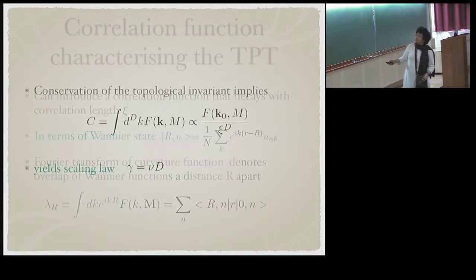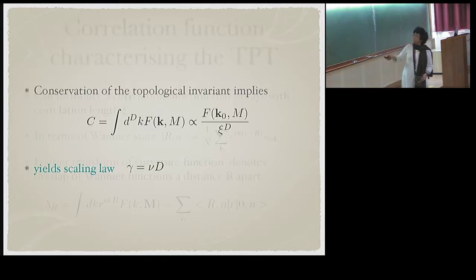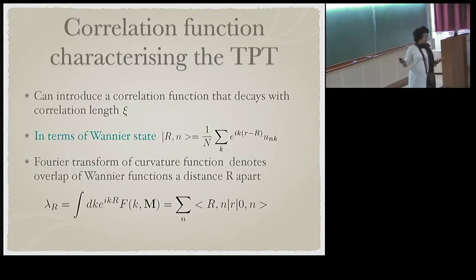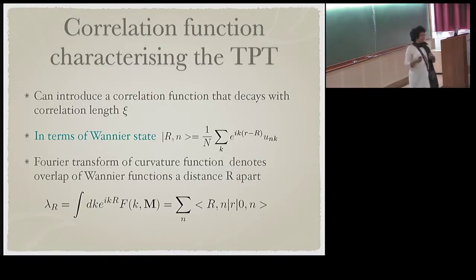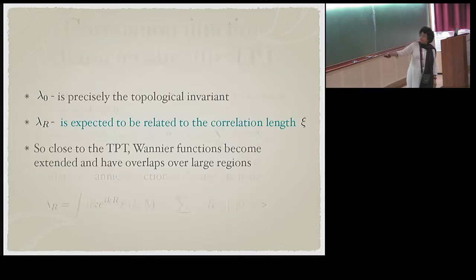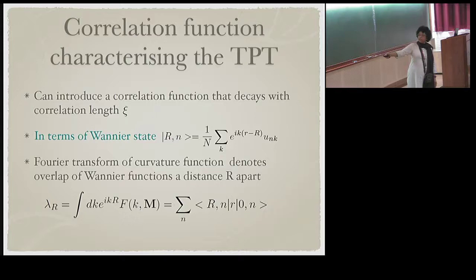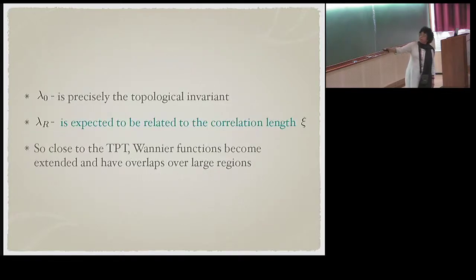In normal phase transitions a length scale ζ is associated with the correlation function. Here one introduces a correlation function that decays with correlation length ζ. In terms of Wannier states, one defines the Fourier transform of the curvature function. This turns out to be related to the overlap of Wannier functions at distance r apart. At r=0, λ(0) gives precisely the Chern invariant; λ(r) is related to the correlation length, so near the topological phase transition, Wannier functions become extended with overlaps over large regions.